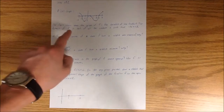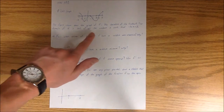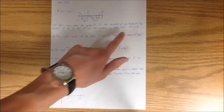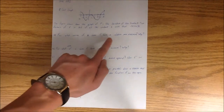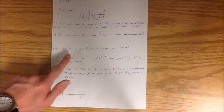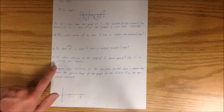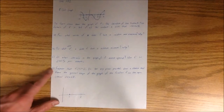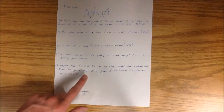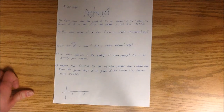The figure above shows the graph of f prime, the derivative of the function. The domain of f is the set of all real numbers x such that negative 3 is less than x less than 5. For what values of x does f have a relative maximum? For what value of x does f have a relative minimum? On what intervals is the graph of f concave upward? Use f prime to justify your answer. Suppose that f of 1 equals 0. In the x-y plane provided, draw a sketch that shows the general shape of the graph of the function f on the open interval 0 less than x less than 2.